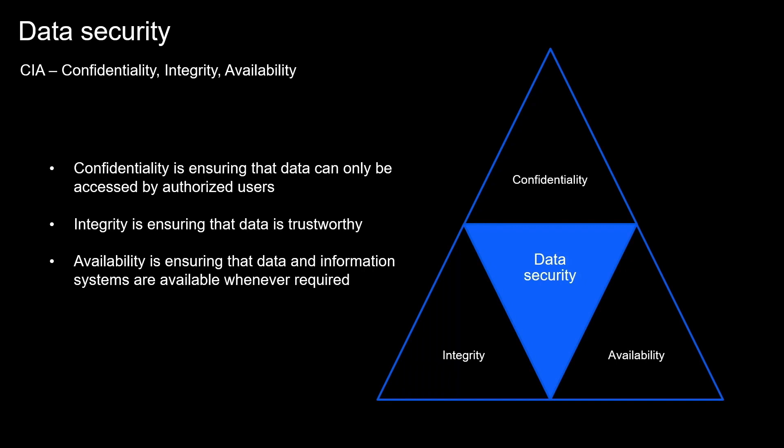Confidentiality is often associated with secrecy and the use of encryption. In this context, it means that data is only available to authorized parties. Data integrity refers to the certainty that data is not tampered with or degraded during or after submission — it has not been subject to unauthorized modification, either intentional or unintentional. Availability means that information is accessible to authorized users when it is needed.